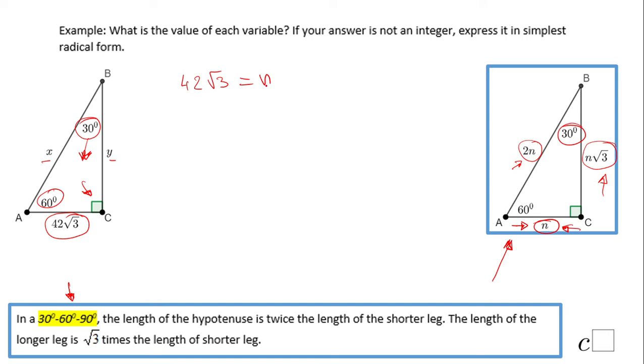I'm gonna start with y. If you take a look, y is nothing else than n√3. So I'm gonna have 42√3 times √3, and that'll make 42 times 3.